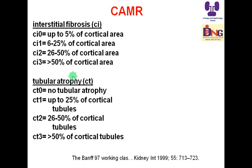When letter C is added to T, it is not tubulitis — it is tubular atrophy. Normally each tubule lies beside the other, back to back. If they lie far from each other, this is tubular atrophy. CT0 means no tubular atrophy. Less than 25% is CT1. Between 26 to 50% is CT2, and above 50% of cortical tubules affected is CT3.